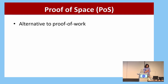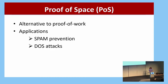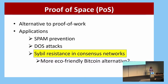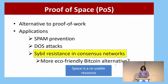A proof of space is an alternative to proof of work, where the resource being used is space instead of computational energy. It should require the prover producing this proof to use significant space. It has all the same applications as proof of work, including applications to spam prevention, mitigating denial-of-service attacks, and most famously to Sybil resistance in consensus networks like Bitcoin.